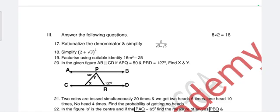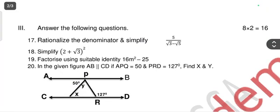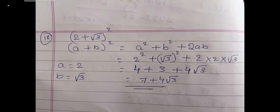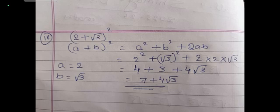Question 18: simplify (2 + √3)². This is in the form (a + b)², so use the formula a² + 2ab + b². Here a = 2 and b = √3. So it becomes 2² + (√3)² + 2 × 2 × √3, which gives 4 + 3 + 4√3, and the final answer is 7 + 4√3.